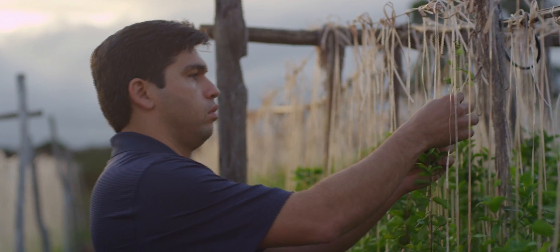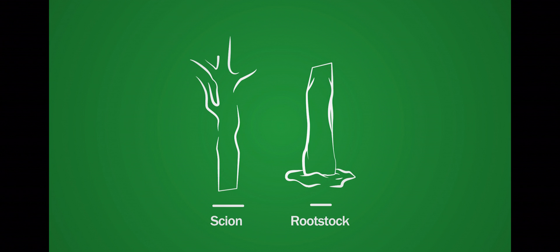The best tree portion, or scion, is grafted to the best rootstock by making cuts in the ends of both sections, then they're joined and wrapped together tightly.